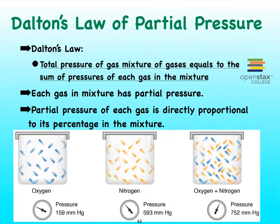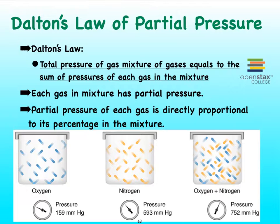For us to understand how gas exchange occurs either at the level of the lungs or in the tissues, we need to learn about a few more laws. First we're going to talk about Dalton's law of partial pressure, which is pretty easy. It says that if we have a mixture of air — let's say atmospheric air — it is made up of different gases: oxygen, carbon dioxide, nitrogen, and water vapor.